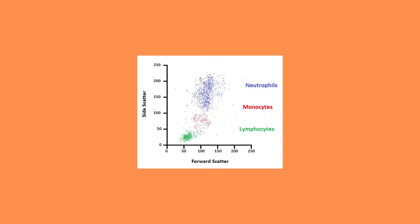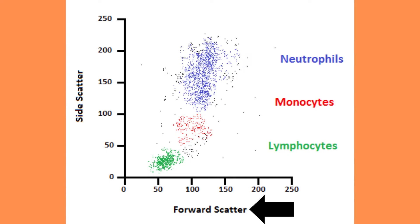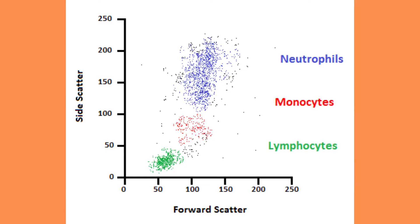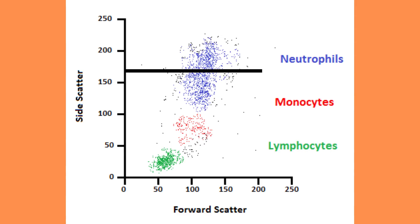By combining these two signals into a graph we get a so-called dot plot. On the x-axis we have the forward scatter, commonly abbreviated as FSC, and on the y-axis we have the side scatter, commonly abbreviated as SSC. Each dot on this plot represents one individual cell. By drawing a vertical line anywhere along the x-axis, all cells close to this line have a similar size, and by drawing a horizontal line along the y-axis, all cells close to this line have a similar degree of complexity.